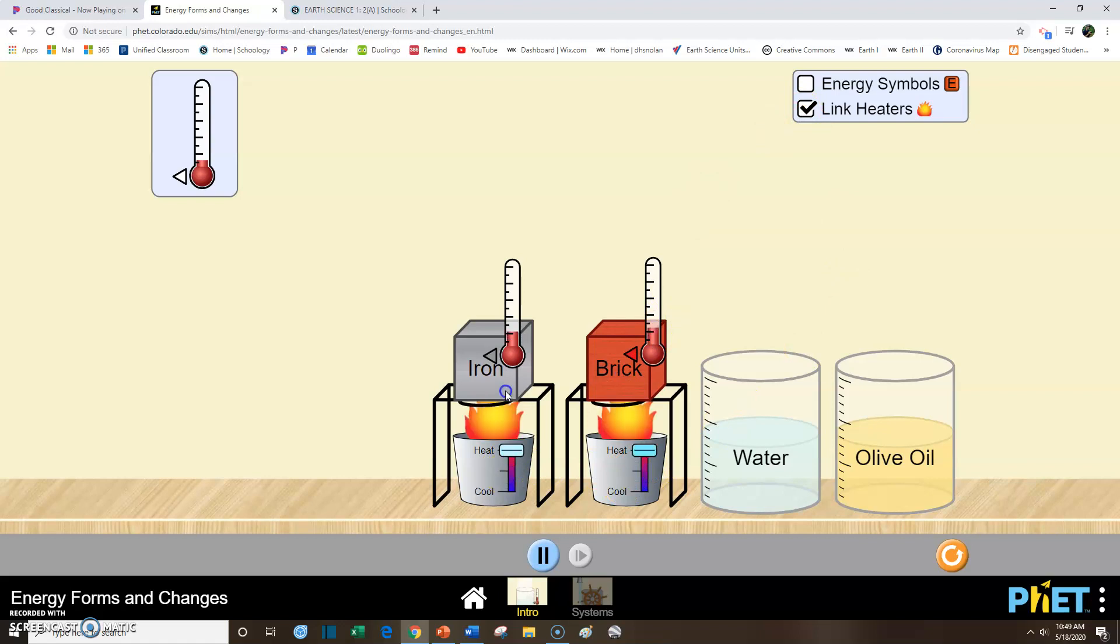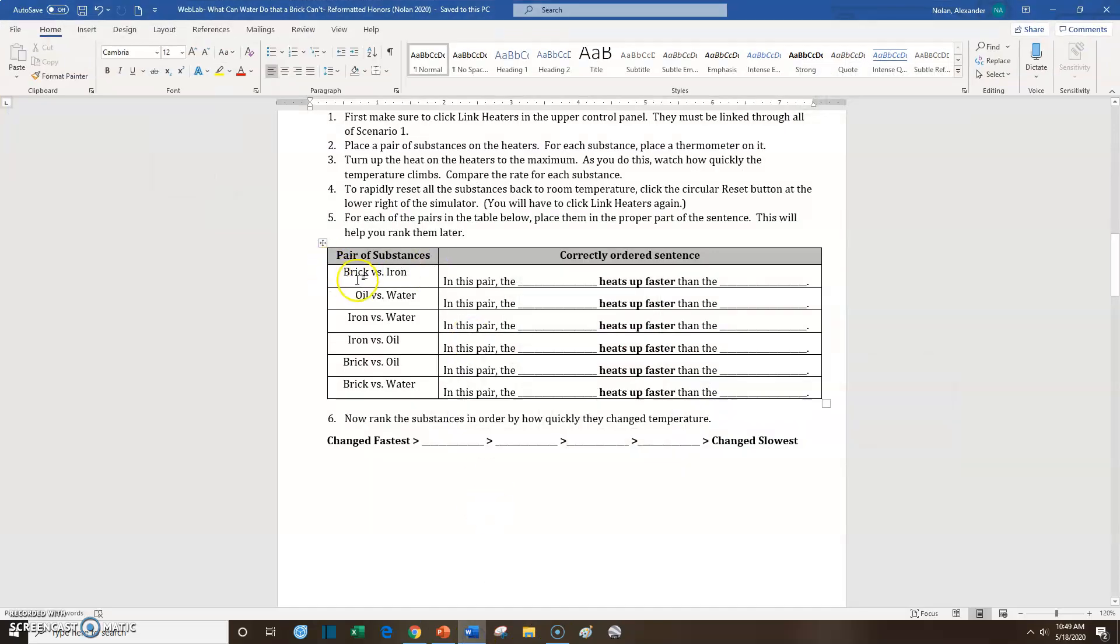Notice both the heaters heat at the same time. And watch the thermometer for the iron and the brick as they're heating. Which one is heating faster? Looks like the brick is actually heating up a little bit faster because the brick's temperature is higher than the iron, even though they've been on for the same amount of time. So what you would say for this first part is that in the brick versus iron, in this pair, the brick heats up faster than the iron. Okay, so that's the case in that one.